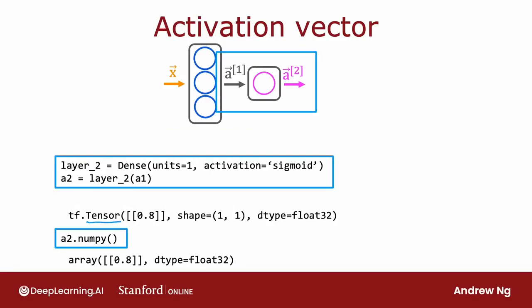Now let's look at the activations output by the second layer. Layer 2 is a dense layer with one unit and a sigmoid activation, and A2 is computed by applying layer 2 to A1. A2 may be a number like 0.8 — technically this is a one by one matrix with one row and one column. If you print out A2, you see it is a TensorFlow tensor with just one element, 0.8, and it is a one by one matrix represented as a float32. You can also convert it back to a NumPy array using A2.numpy().